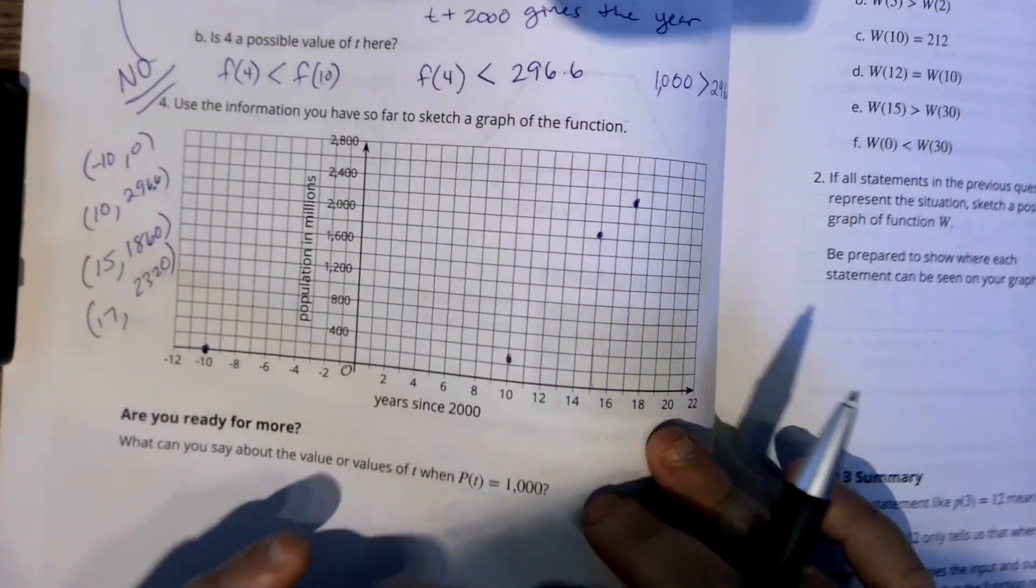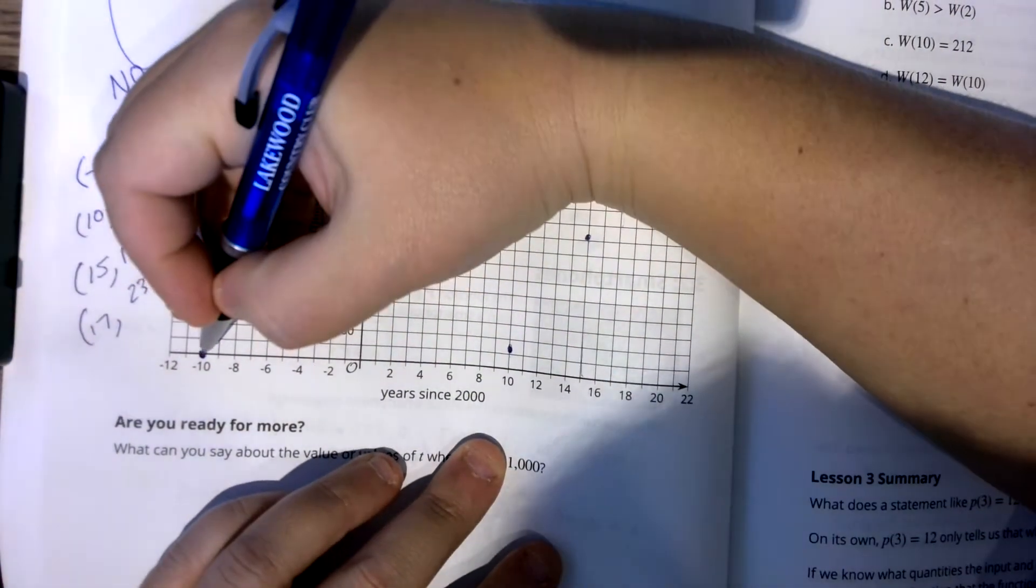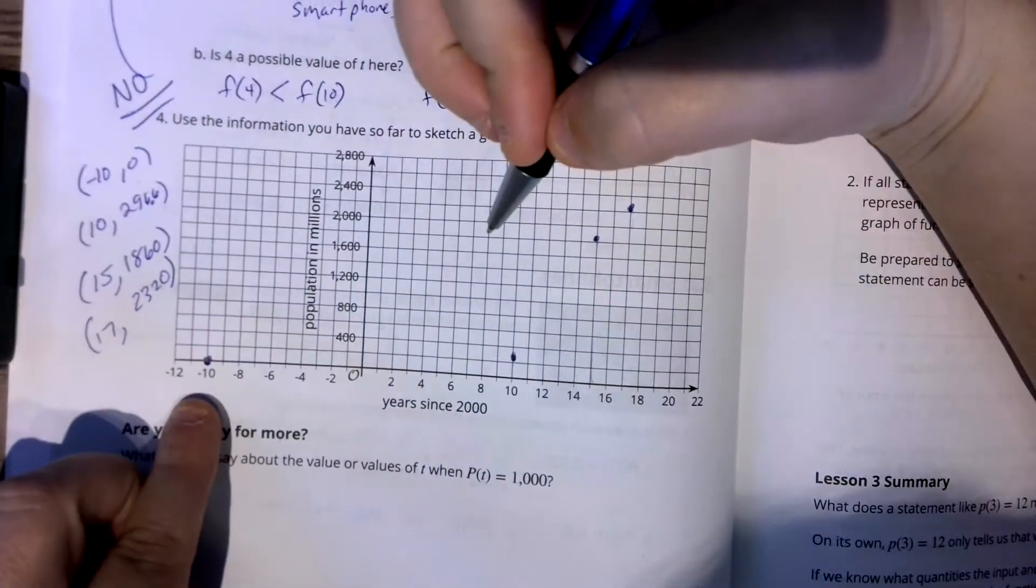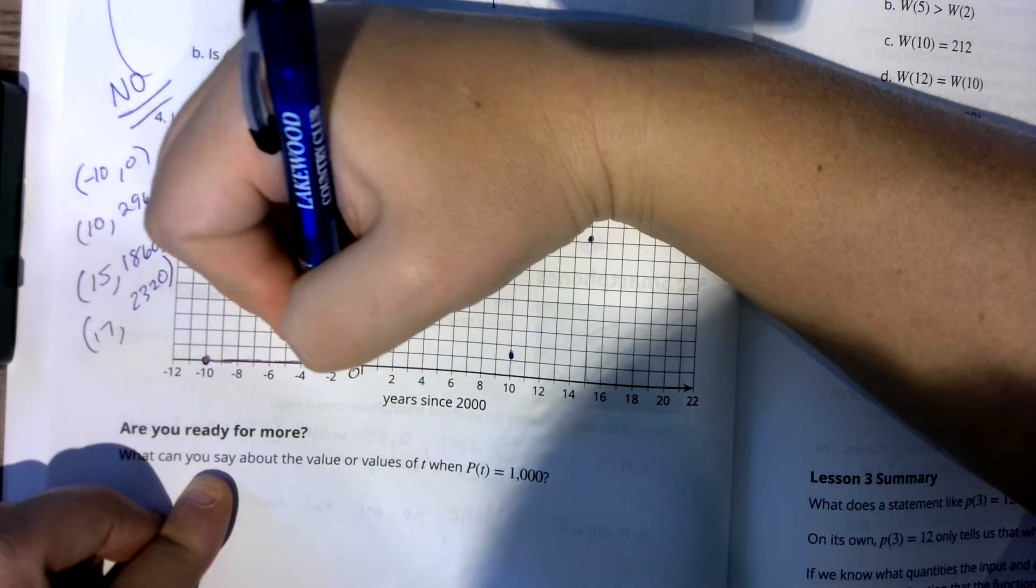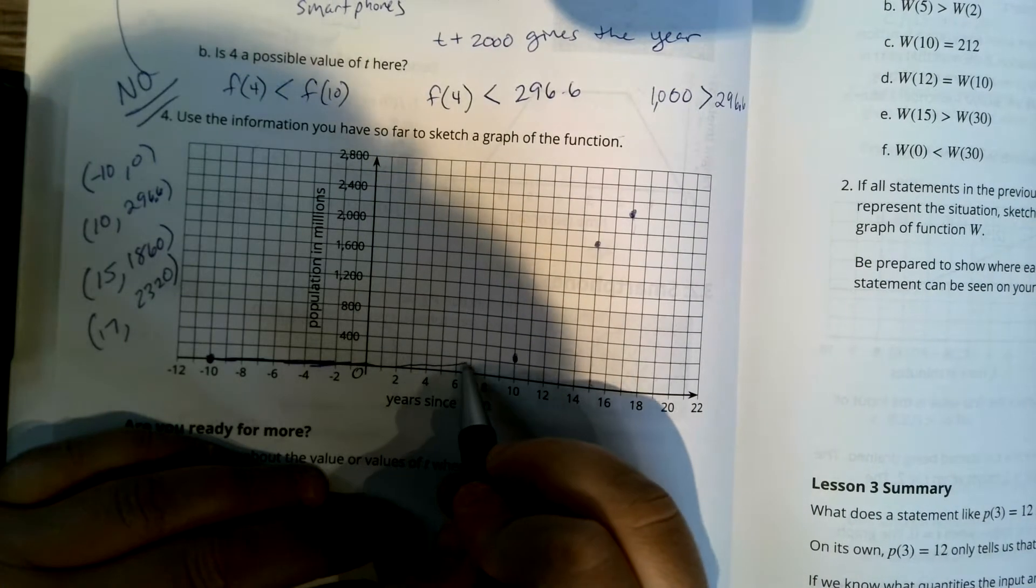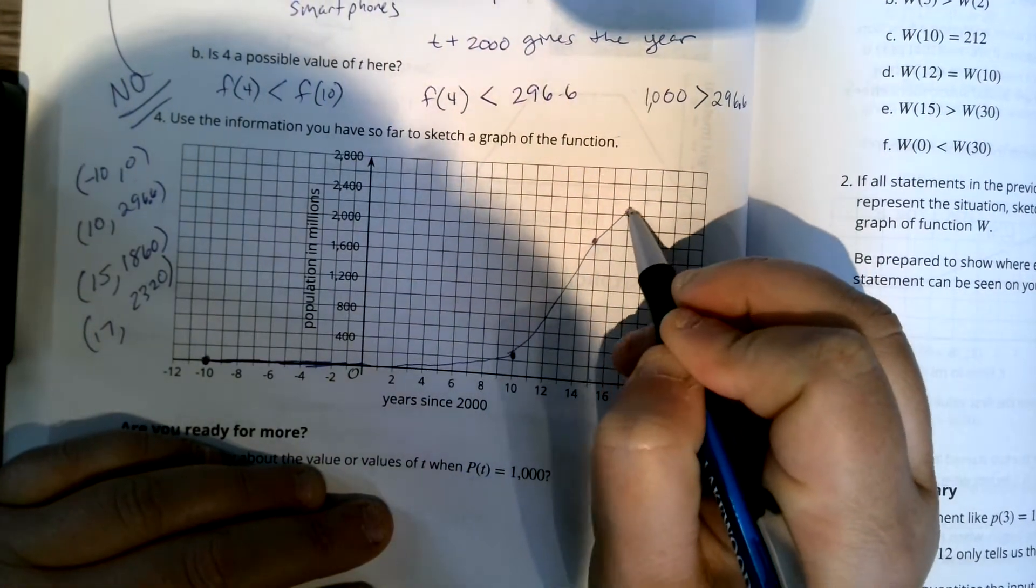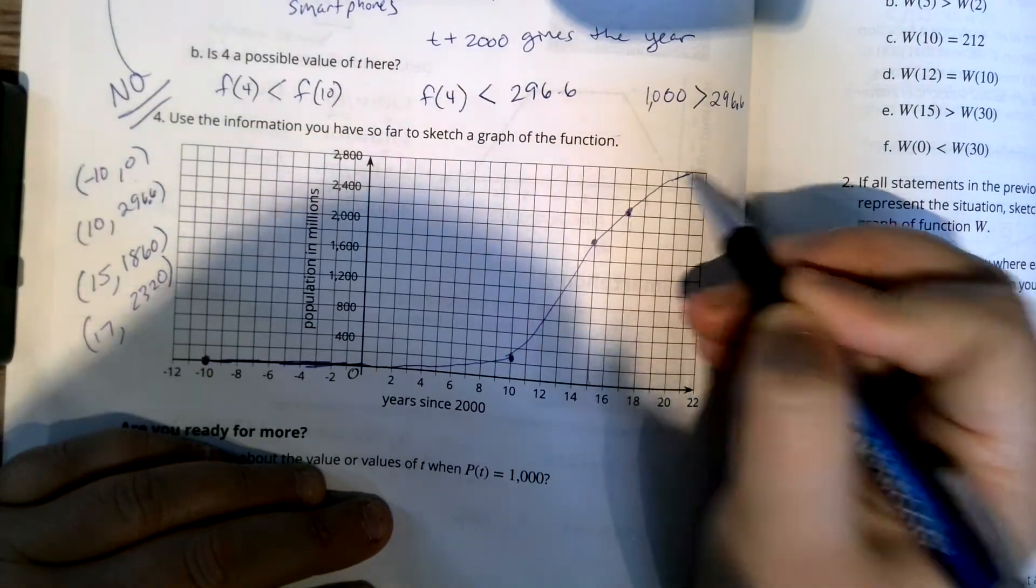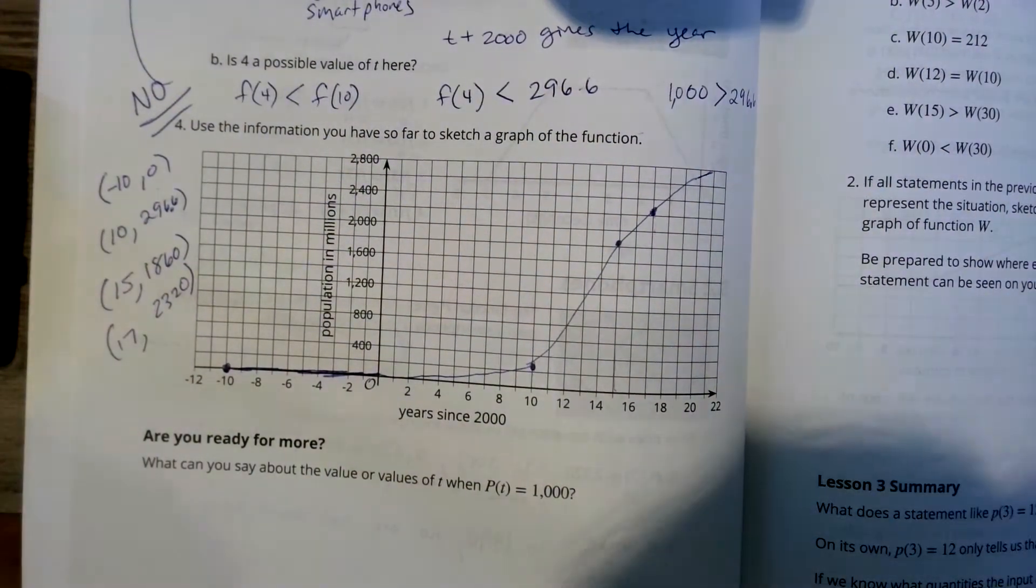Okay, so continuing with this problem, we plotted our four points. Remember from the year 1990, which is negative 10, up until the year 2000, nobody had smartphones, and then it gradually keeps going up, then a big spike, and we don't know where it's going to go after that. So that's a rough sketch of our function.